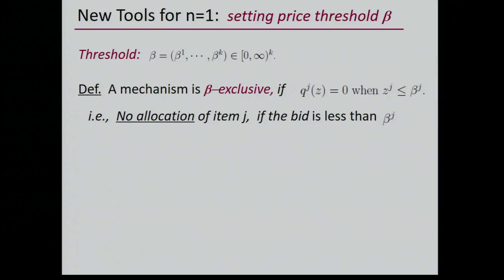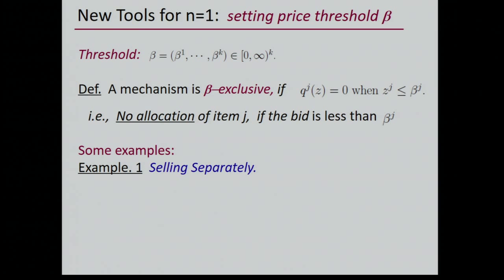We say that a mechanism — now considering one-buyer K-item auctions — is called beta-exclusive if no allocation can be made when the bid is less than beta_j. We want to design the best beta-exclusive mechanism that gives maximum possible revenue. To design a simple mechanism, we want to find a simple beta-exclusive mechanism that is a good approximation of the best beta-exclusive mechanism.